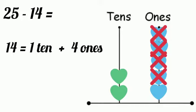Then, from that 2, we should subtract 1. We should cross out 1. How many left over? Yes, 1. So, the answer is 11.